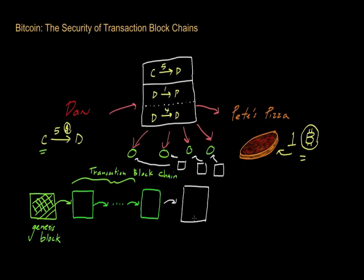Each proof-of-work puzzle that is associated with a transaction block happens to have a difficulty score associated with it. This difficulty basically represents how hard it was to solve that proof-of-work puzzle.